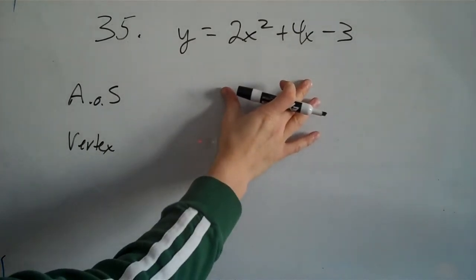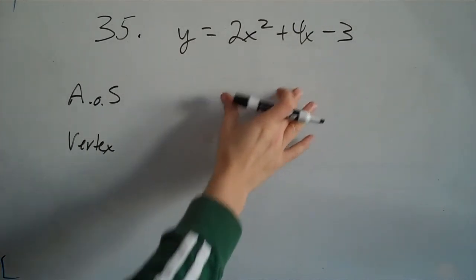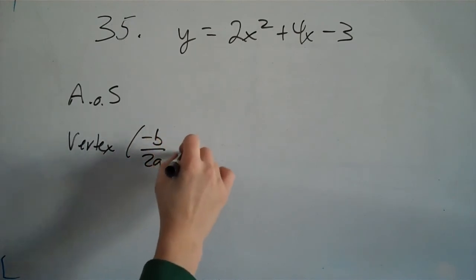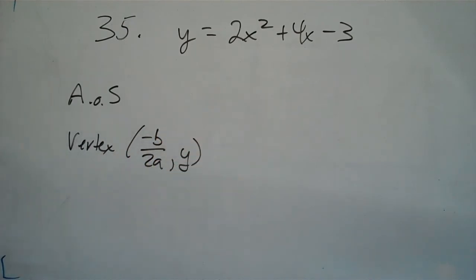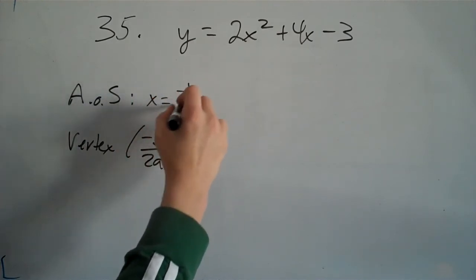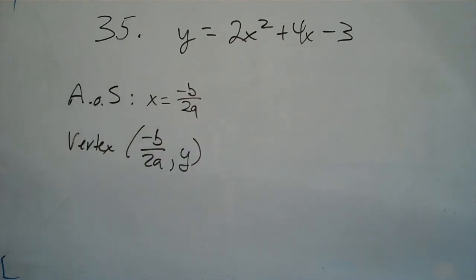Since this is not in vertex form, we're going to use the formula to find the vertex, which is negative b over 2a comma y to find the vertex. And we know the axis of symmetry is x equals negative b over 2a because it's just the x value of the vertex.